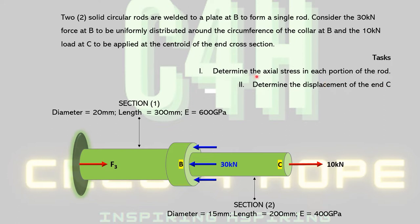We're being tasked to do the following: one, determine the axial stress in each section of the rod, and two, determine the displacement at end C. We'll be given further information regarding each section. Section one has a diameter of 20 millimeters, a span from A to B of 300 millimeters, and a Young's modulus of 600 GPa. Section two has a diameter of 15 millimeters, a length of 200 millimeters, and a Young's modulus of 400 GPa. The two materials are not the same, hence the two different values for Young's modulus.